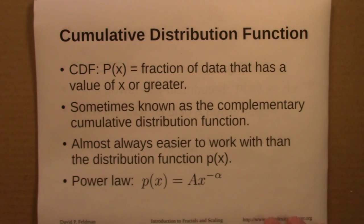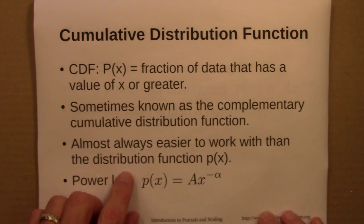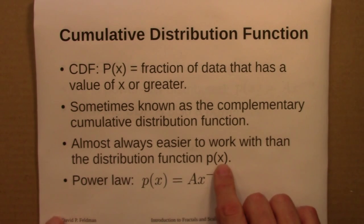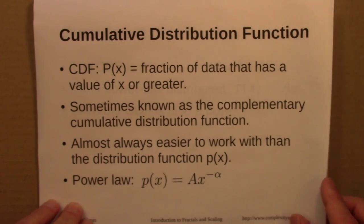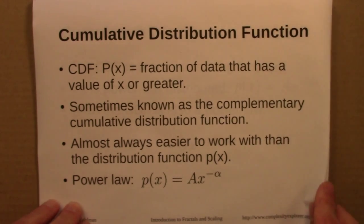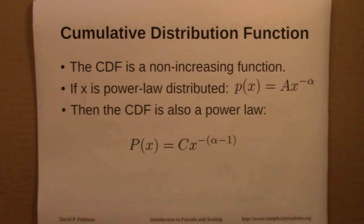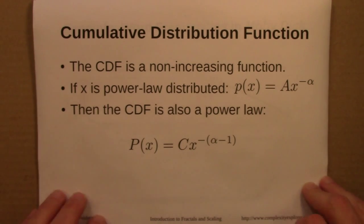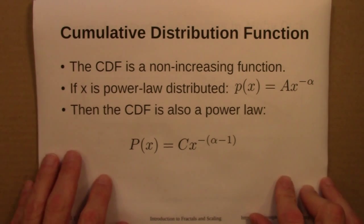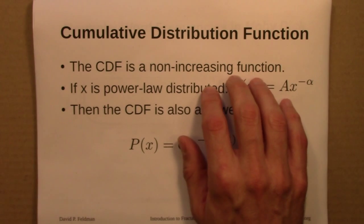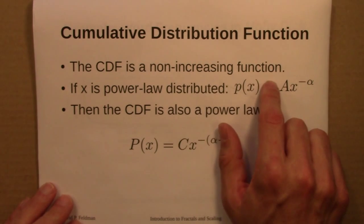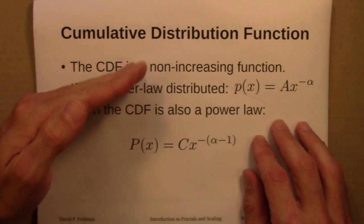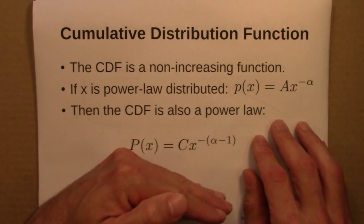When doing inference, it's almost always easier to work with the cumulative distribution function than the distribution function itself. The CDF is a non-increasing function — it can never increase; it can only stay level or step down.